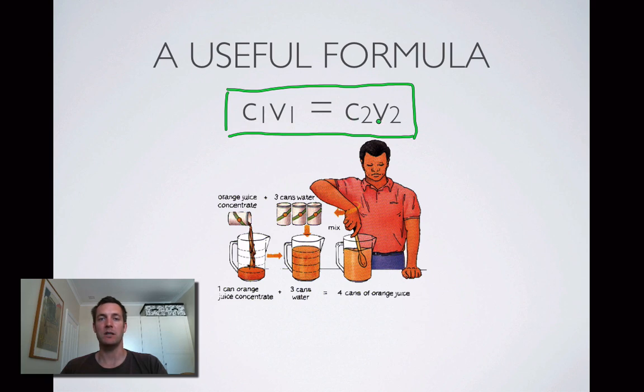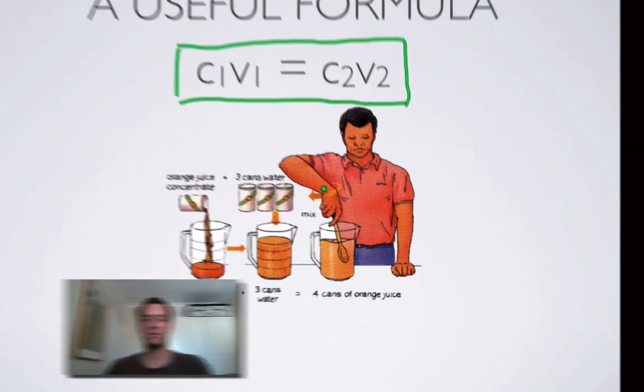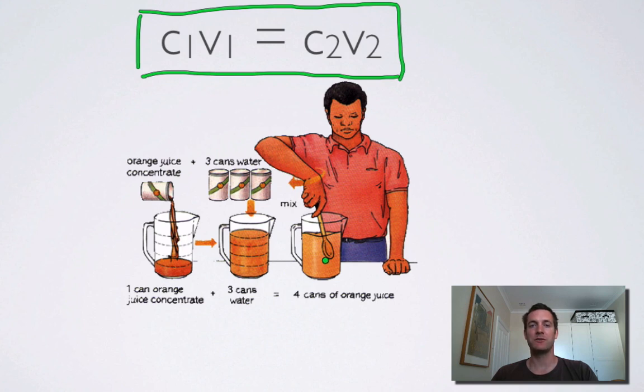If we look at this picture of some chap making himself some orange juice starting with a concentrate, we can hopefully understand what these symbols mean in this context. Here is our original solution, this concentrate, so we know its original concentration is going to be C1. How much of it do we have to start with? That's V1.